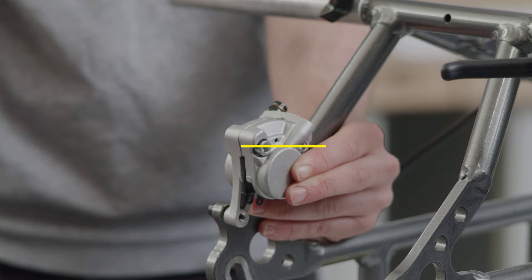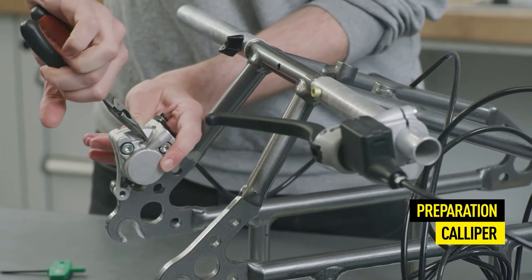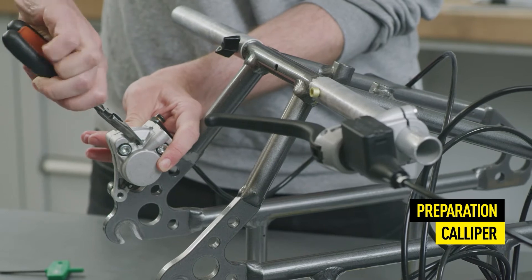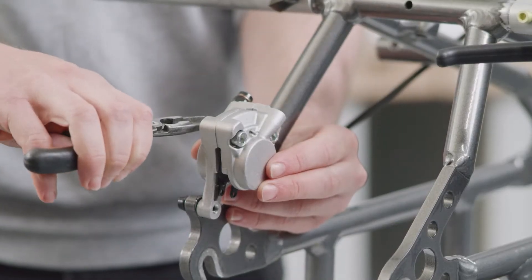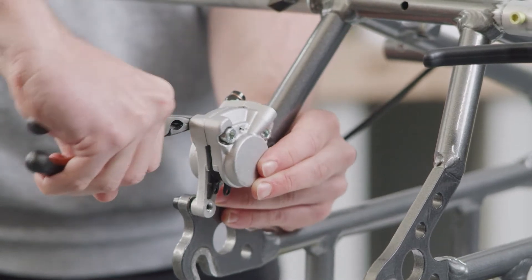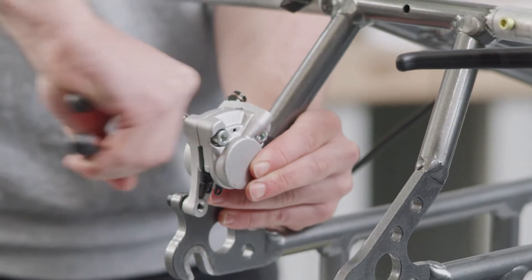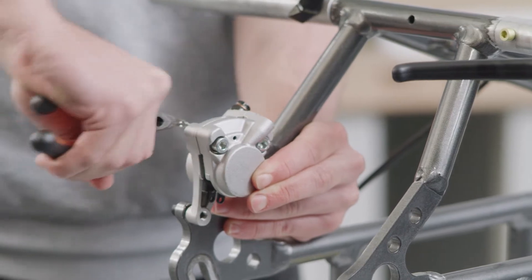Pull the securing pin out of the first caliper so that you can remove the pads. Then remove the pads. Push the thick side of the transport retainer between the pistons and secure it with a rubber band. If necessary, repeat this step with the second brake caliper.